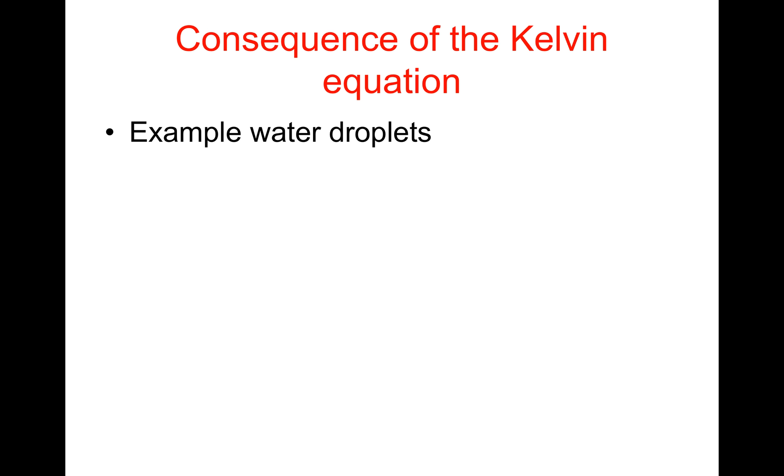As a consequence of the Kelvin equation, we have several phenomena. Here is an example of water droplets. If we compare the radius of the droplet in meters to the partial pressure P_r/P₀, we find that when the radius is 10⁻⁶ meters, the relative pressure is 1.001. When it is 10⁻⁷, the relative pressure becomes 1.01. When it is 10⁻⁸, P_r/P₀ is 1.1. When it is 10⁻⁹, P_r/P₀ jumps to 3.0. It can be seen that as the droplet drastically reduces in radius, the relative pressure increases drastically too.